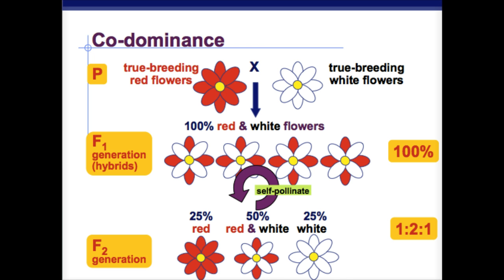In the F2 generation, you'll have 25% red, 50% red and white, and 25% white.